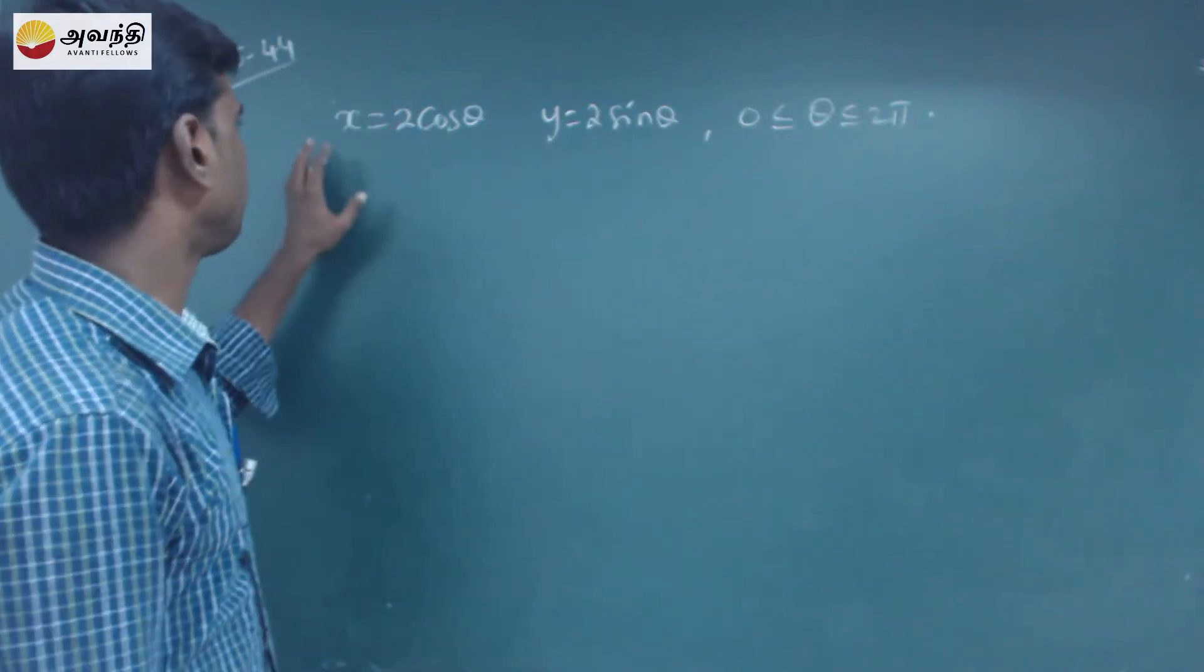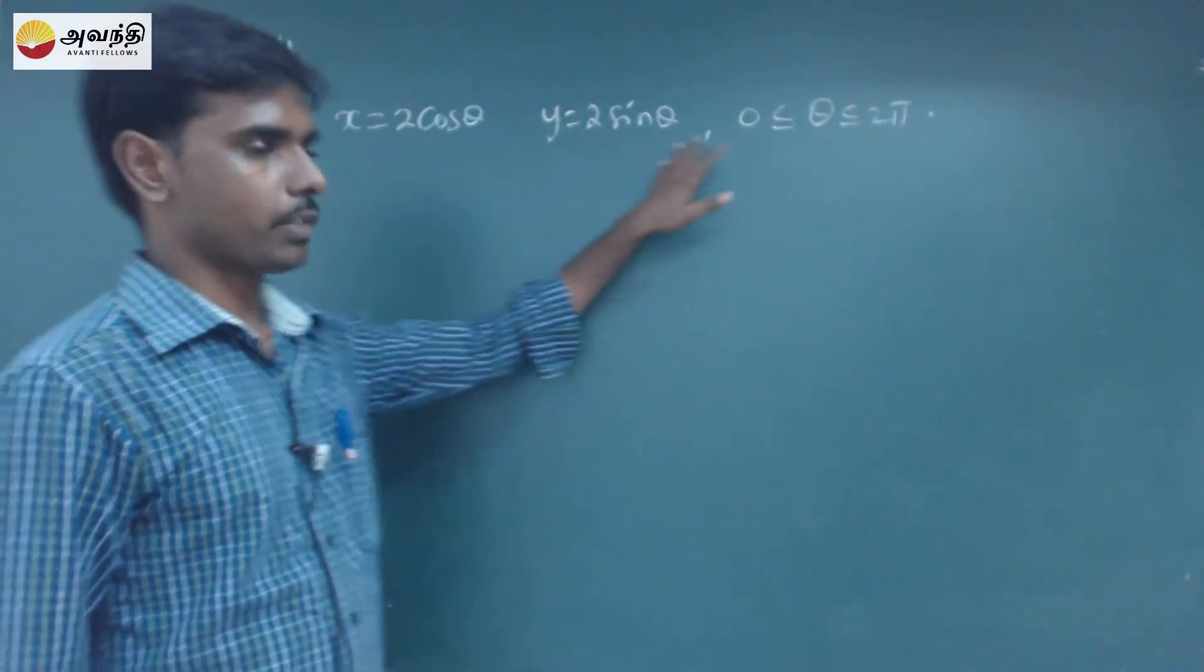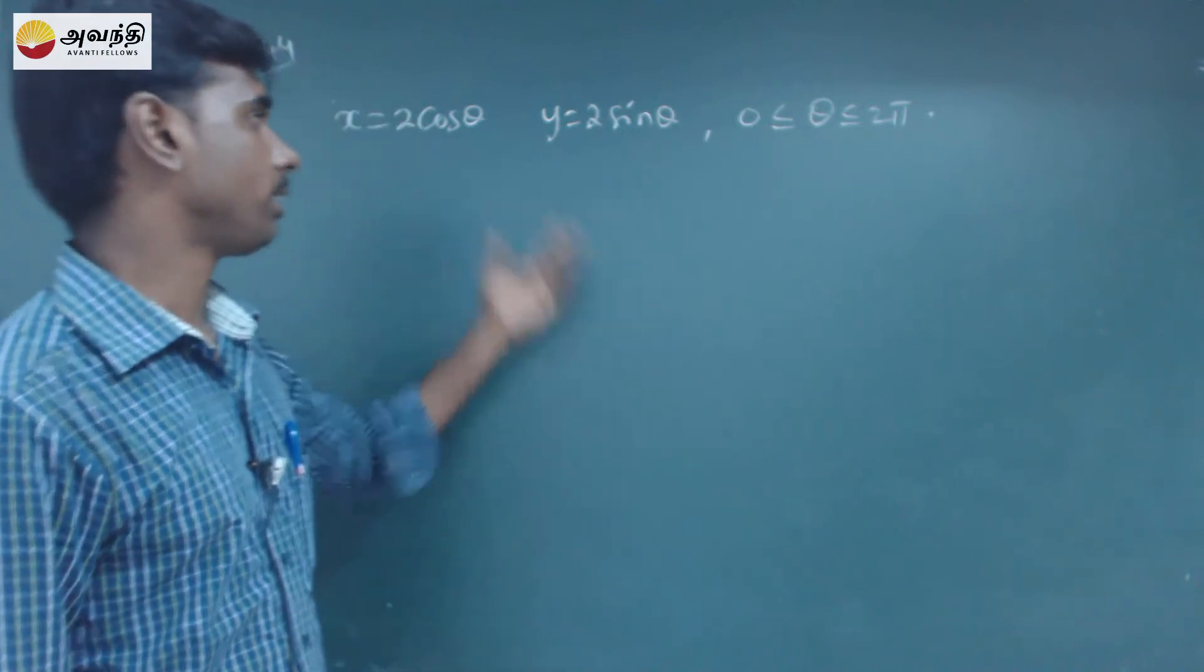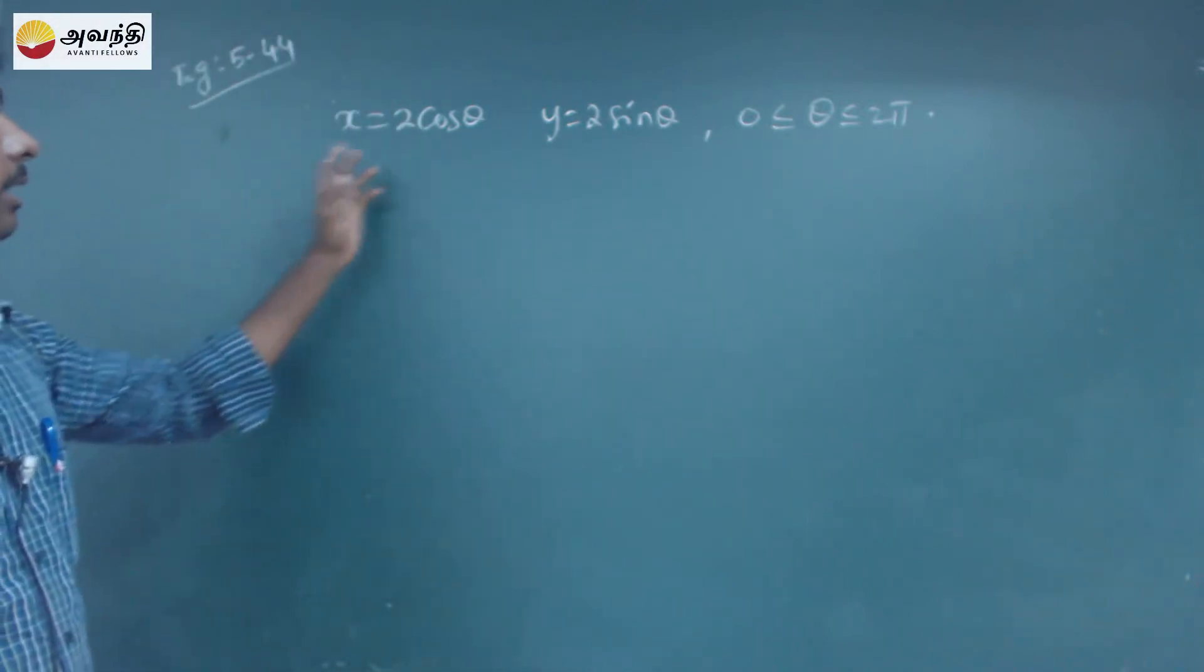So next example is, we have to do a parametric equation, we are going to do a Cartesian equation. How do we do a Cartesian equation here?